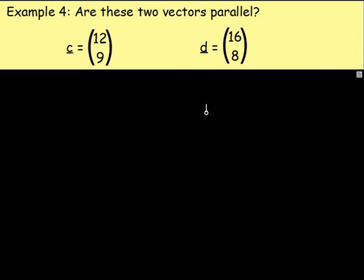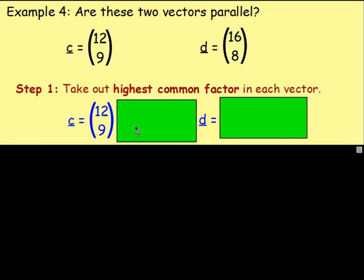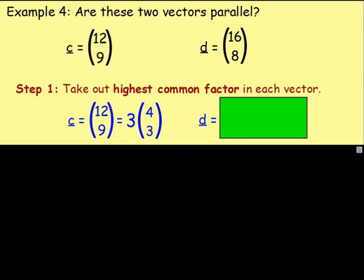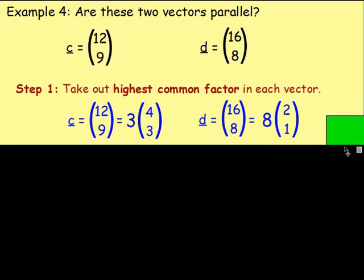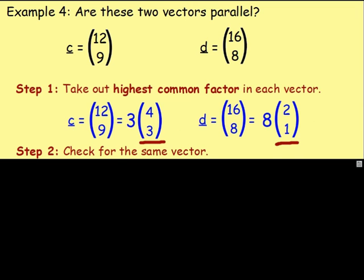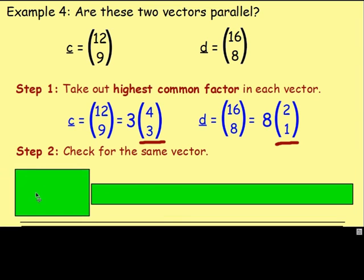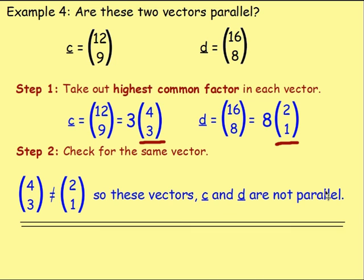Next one. Example 4: are these two vectors parallel? We have vector c and vector d — c is (12, 9) and d is (16, 8). First, take out the highest common factor in each vector. For c with (12, 9), the highest common factor is 3, so take out 3: 3 times the vector (4, 3). For d with (16, 8), the highest common factor is 8, so take out 8: 8 times the vector (2, 1). We're looking for the same vector — but here we've got (4, 3) and here we've got (2, 1). We've taken out the highest common factor, so we can say these two vectors are not equal. (4, 3) is definitely not the same as (2, 1), which means that vectors c and d are not parallel.